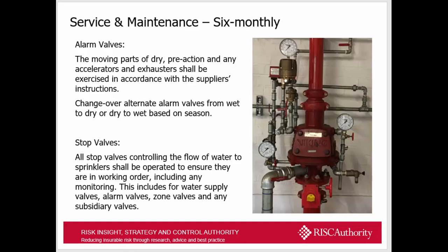Six-monthly requirements: alarm valves need to be overhauled, with moving parts exercised in accordance with the supplier's instructions. If you have any alternate valves — only present on existing systems as they are no longer permitted — they must be changed over every six months between warm and cold weather seasons, from dry to wet and vice versa. All stop valves controlling the flow of water to sprinklers shall be operated to ensure they are in working order, including all water supply valves, alarm valves, zone valves, and any other subsidiary valves on the system.